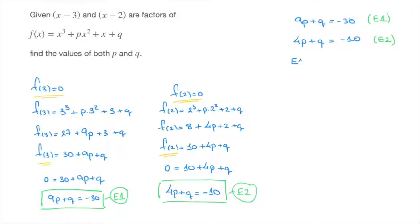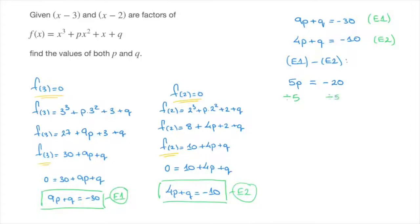So let me write E1 minus E2. Subtracting E2 from E1, we have 9p minus 4p, which leaves us with 5p. We then have q minus q, which equals 0, so we've eliminated q on the left-hand side. On the right-hand side: negative 30 minus negative 10, that's negative 30 plus 10, which is negative 20. Dividing both sides by 5, p equals negative 20 divided by 5, which is negative 4.